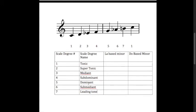Just a note again on these scale degree names: another way to remember the subdominant is that it's below the dominant, sub meaning below. Also, the only scale degree name I've ever heard about changing is changing the leading tone to the subtonic. However, that's only if the seventh degree were flat, but since this is a harmonic minor scale, the leading tone is not flat, so it's still the leading tone.